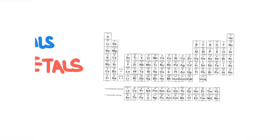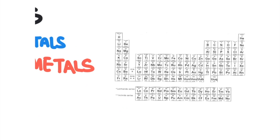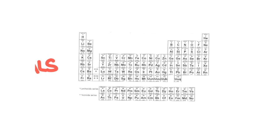You might wonder what counts as a metal versus a non-metal. On the periodic table, the elements on the left side are called metals, and the elements on the right side are called non-metals. There is a boundary line on the periodic table that separates the metals from the non-metals.